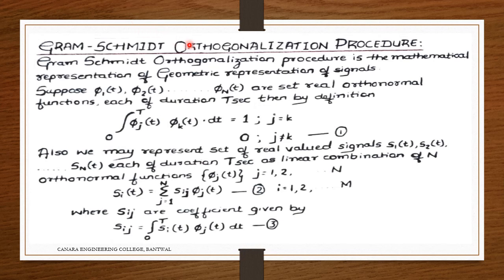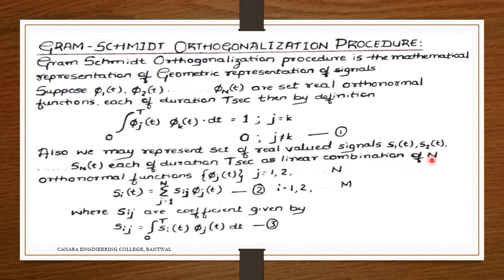Next is the Gram-Schmidt orthogonalization procedure, which is the mathematical representation of the geometric representation of signals. Suppose pi_1(t), pi_2(t), up to pi_N(t) are a set of real orthonormal functions each of duration T seconds. By definition, the integration from 0 to T of pi_j(t)·pi_k(t) dt equals 1 for j=k and 0 for j≠k. This is equation 1.